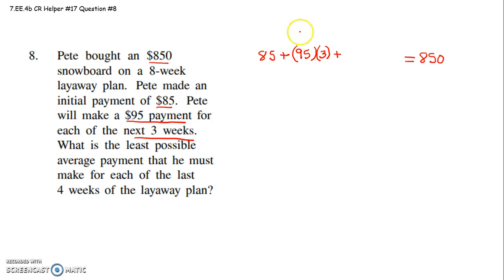That way he's paid his initial $85, $95, $95, $95. And then what average payment must he make for the last four weeks of the payment plan? So let X equal average payment last four weeks of the plan.